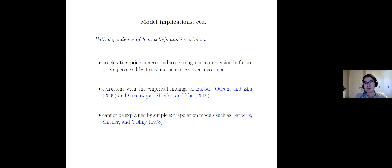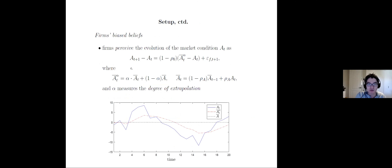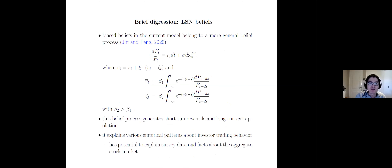In the domain of asset pricing, Greenwood and Shleifer's bubbles JFE paper finds that if you have accelerating price increase, the crash likelihood goes up a lot — consistent with the notion that people's beliefs become more reverting with accelerating price increase. This type of path-dependent investor belief cannot be captured by simple extrapolation models like Barberis, Shleifer, and Vishny 1998. This is a brief digression into what I call law of small number type beliefs.